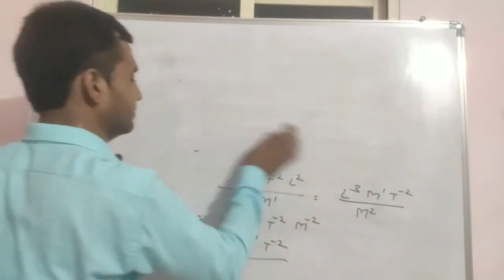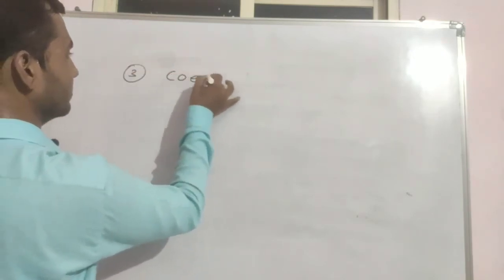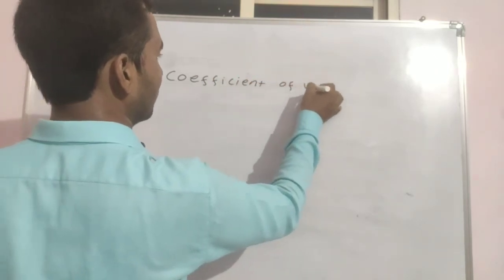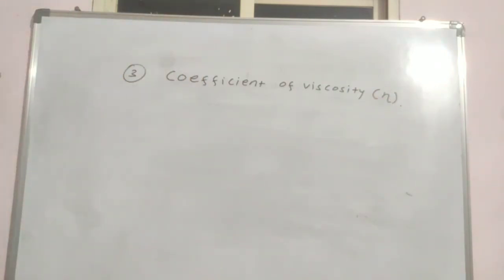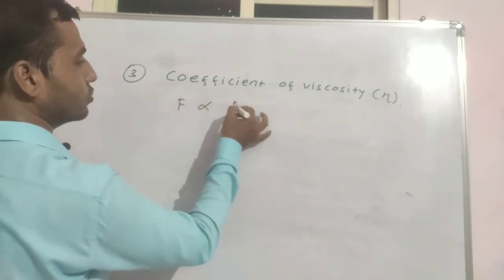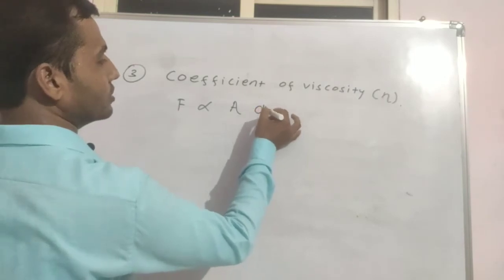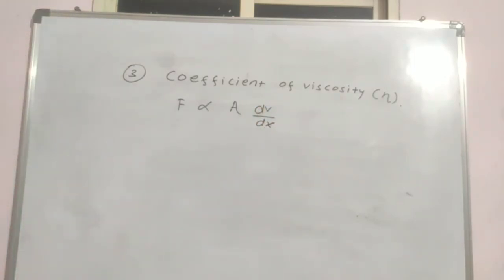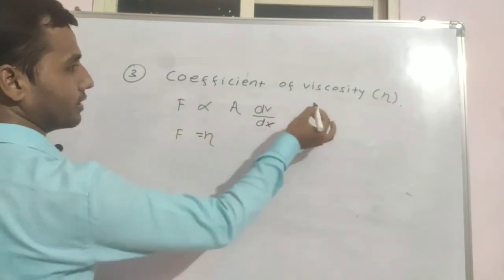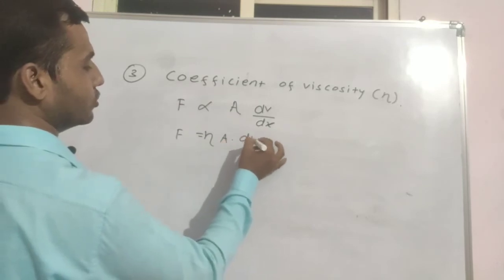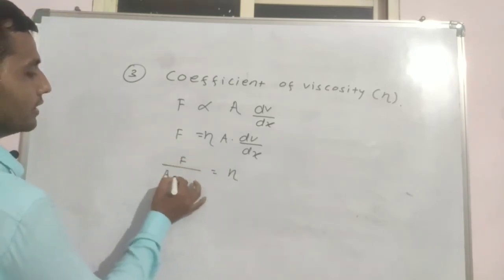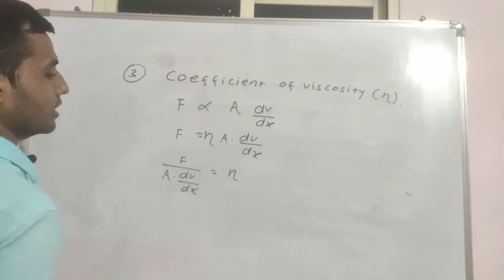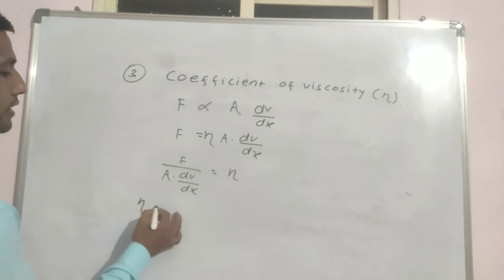Now we will see next one, that is coefficient of viscosity, number third, coefficient of viscosity that is denoted by eta. So the viscous force is directly proportional to the area and velocity gradient which is dv upon dx. So from this, eta is equal to F upon A into dv upon dx.